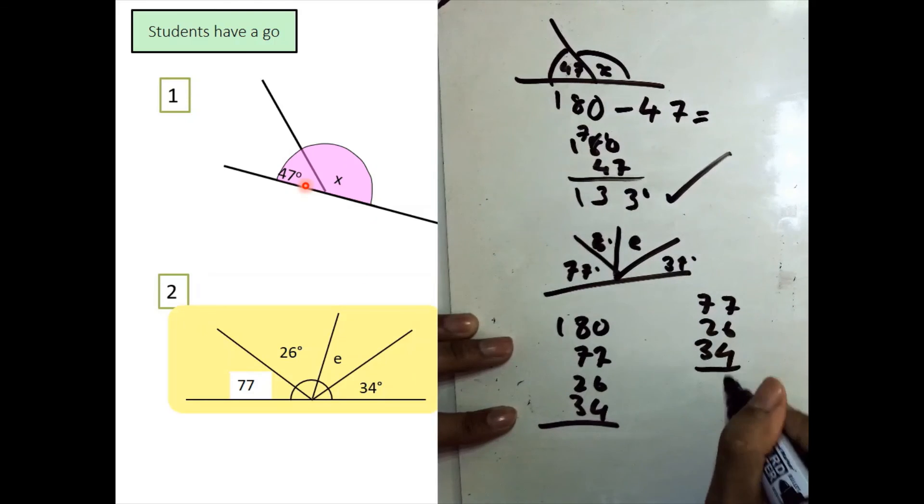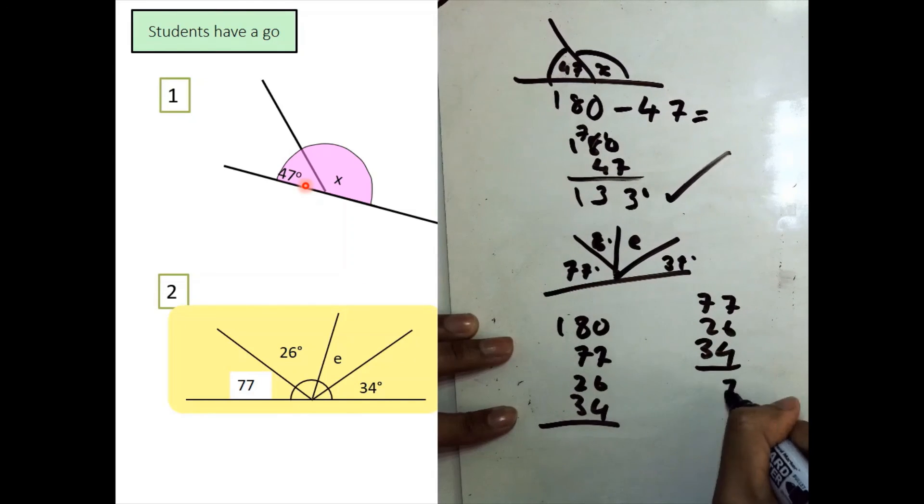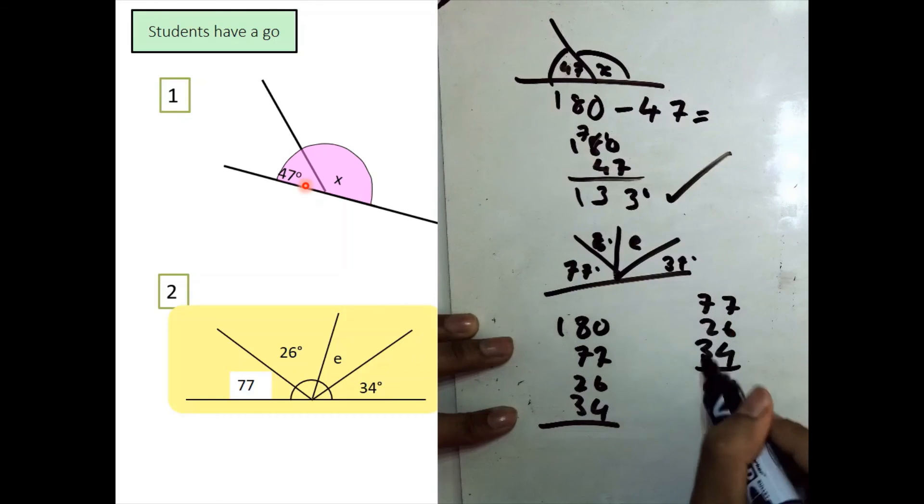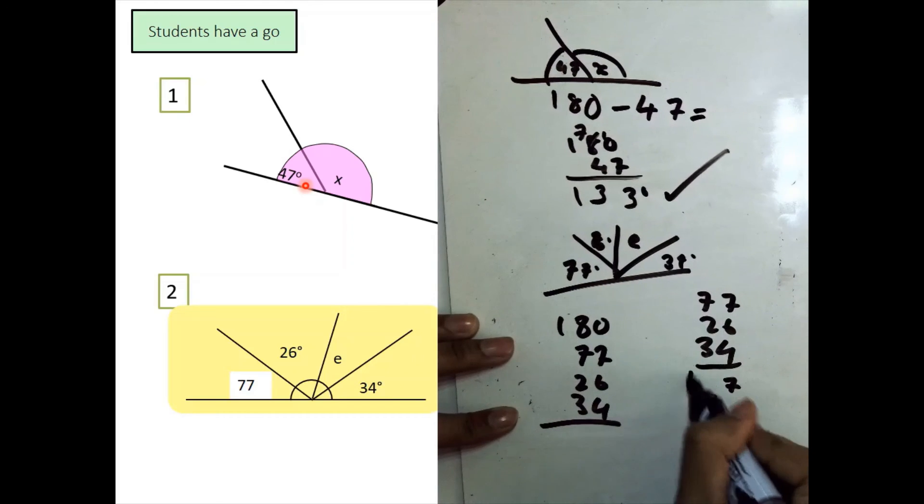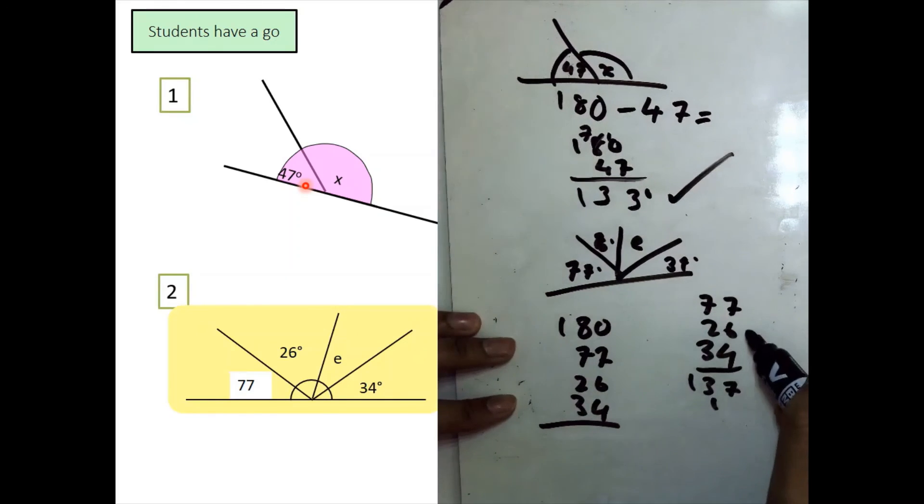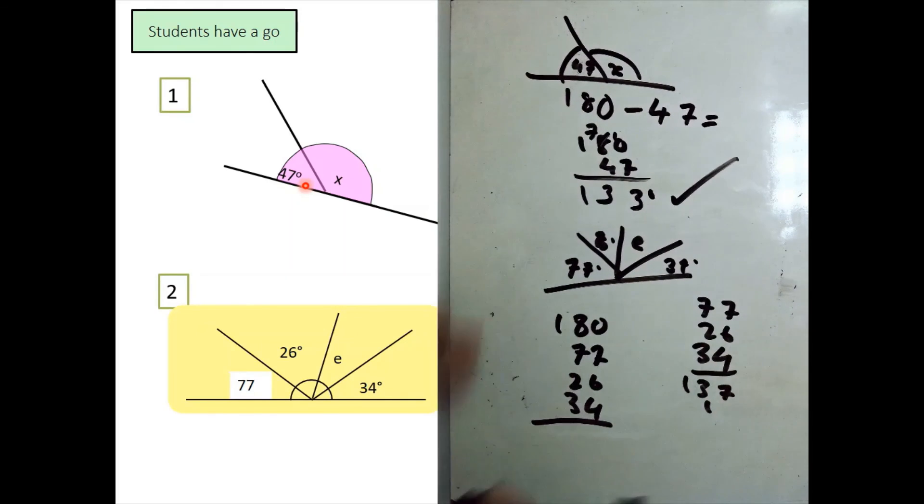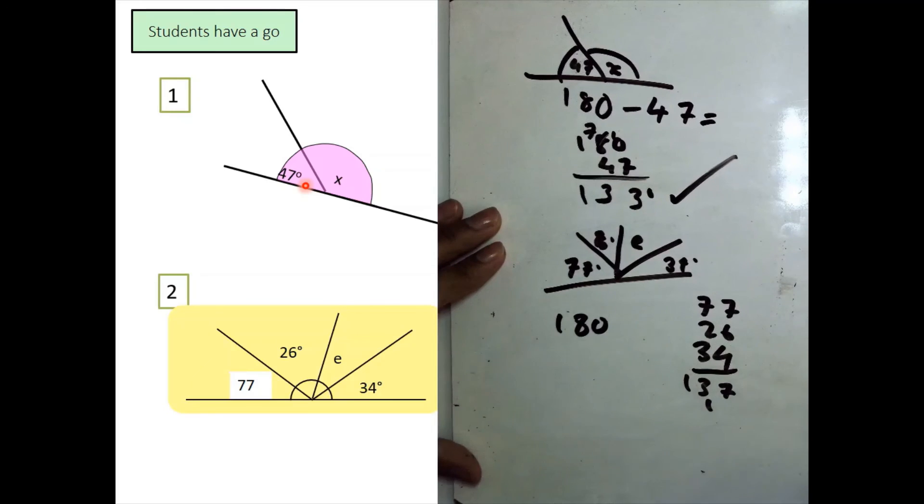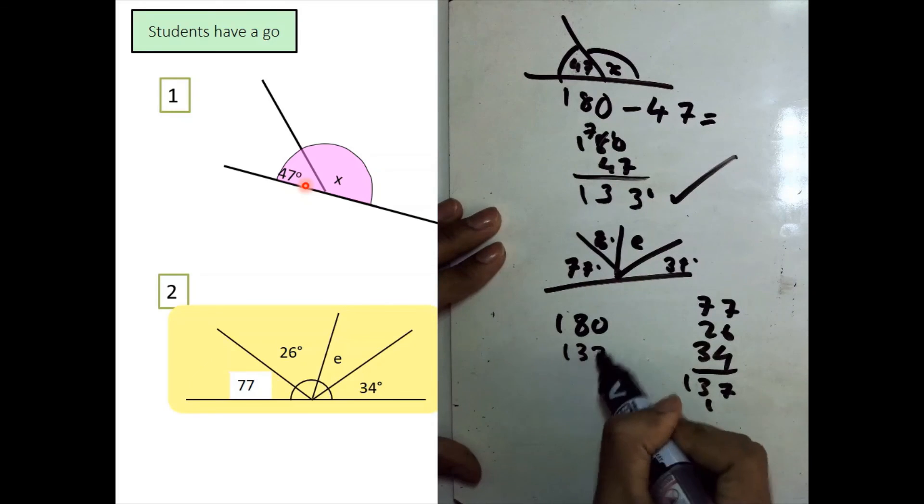So, 7 add 6 add 4. 7 add 6 will be 13. Add that 4 will be 17. Carry the 1. 7 add 2 is 9. 9 add 3 is 12. That would be 137 in total. So, rather than subtracting these three numbers separately, we can subtract a total amount of 137.